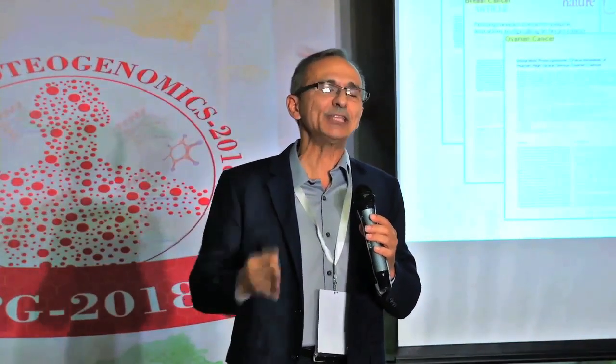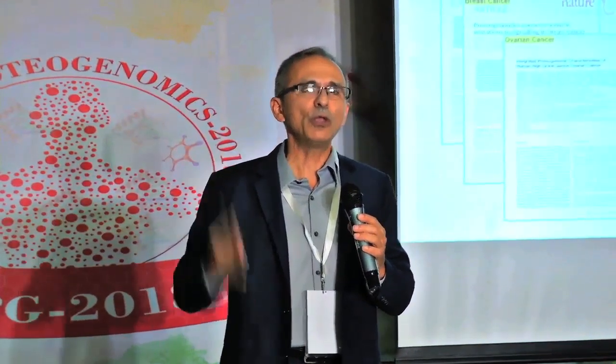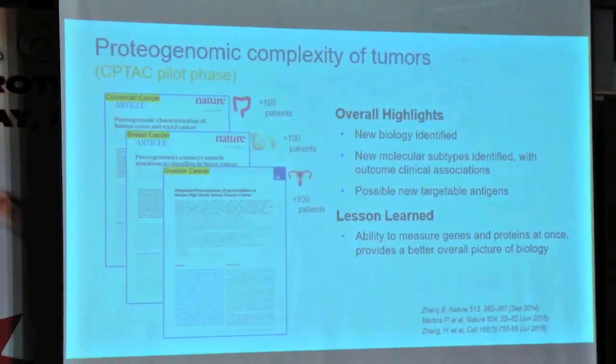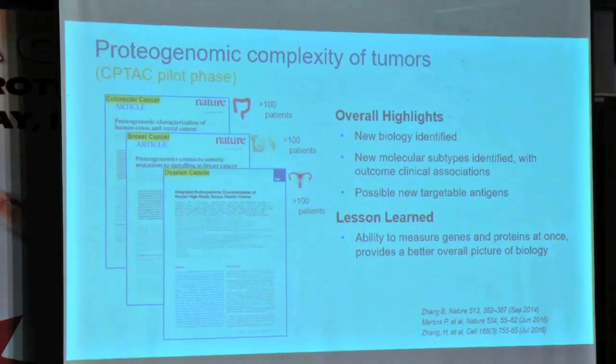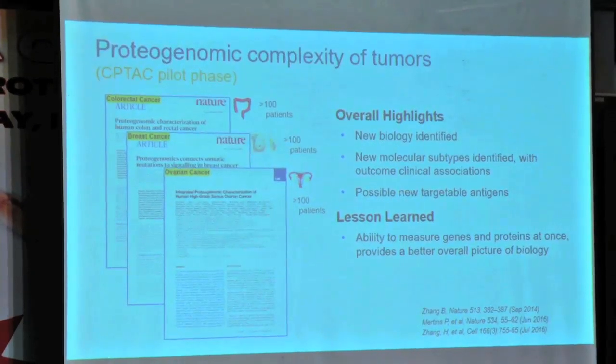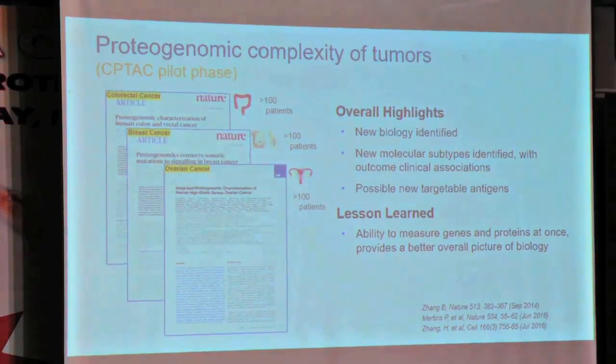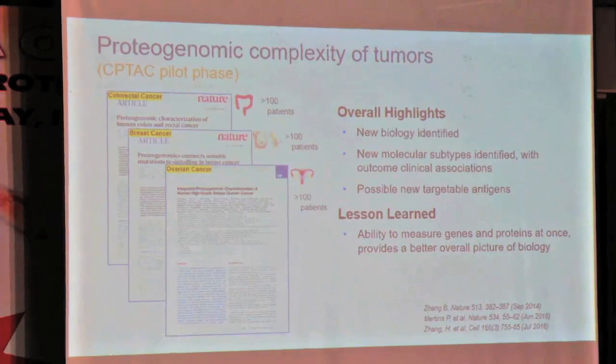In each one of these cancer types, we were able to identify additional biology that was missed simply because it cannot be obtained from genomics itself, or it's just a better way of integrating the data set between genomics and proteomics. Furthermore, what we learned was that if you simply go after one type of omic — whether genomics, transcriptomics, or proteomics — most likely you're going to be missing key biology that could be inferred from one of those other omics. So integrating those worlds will become very important for our program.